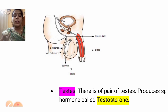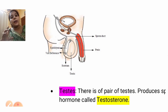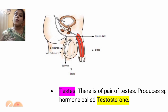So the parts are: we have testes, we have scrotum, we have vas deferens, we have epididymis and male glands — that is prostate glands, seminal vesicle, Cowper's glands — and then you also have the sperm duct and the penis.